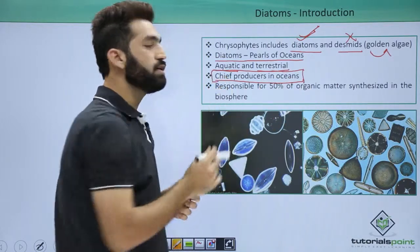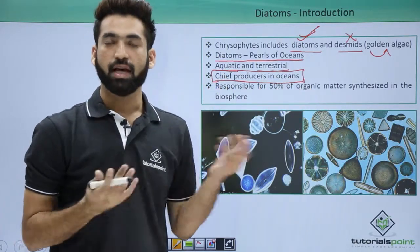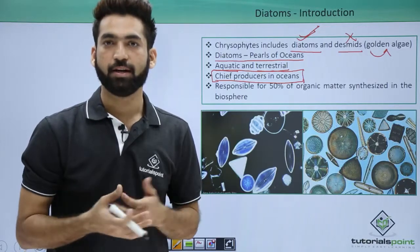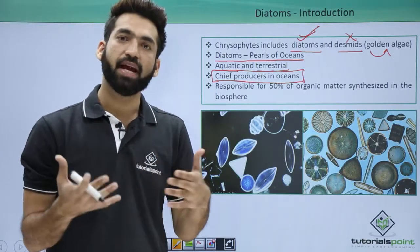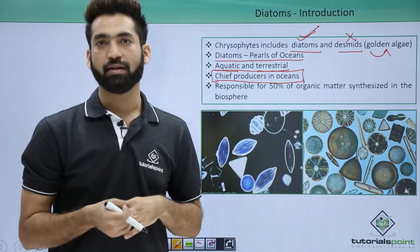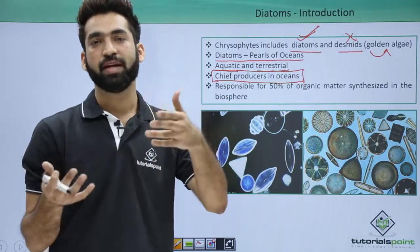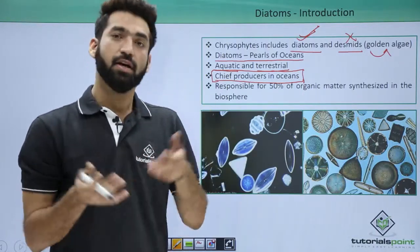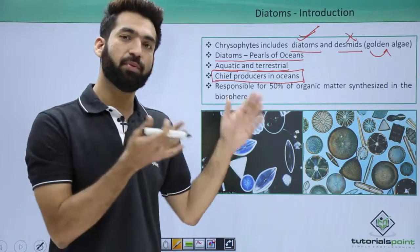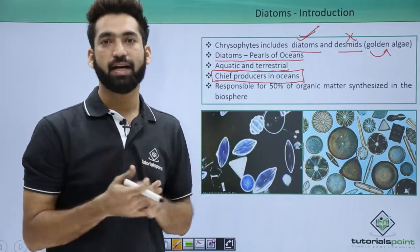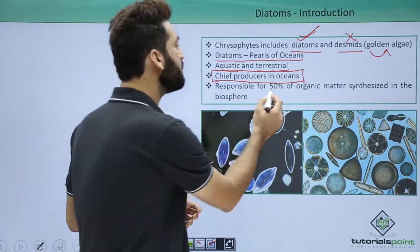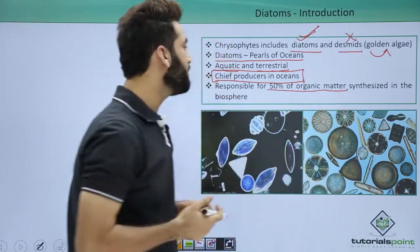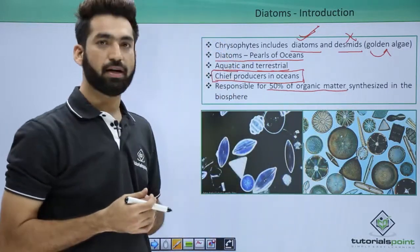They are chief producers in oceans means they are photosynthetic, so they can make their own food. They are present in oceans and make up the major amount of phytoplanktons, which are consumed by zooplanktons, smaller fishes, and bigger fishes. They form an important component of aquatic food chains and are responsible for around 50% of the organic matter synthesized in the biosphere.